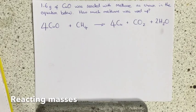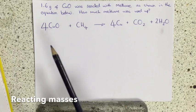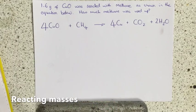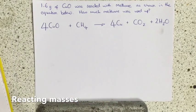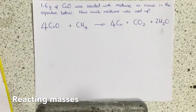Hi guys, I'm just going to show you a really easy way of doing one of these reacting mass calculations. The example I've got is reacting methane with copper oxide like you did in your practical. Let's imagine we started with 1.6 grams of copper oxide and we react it with methane gas. The question is how much methane gas would we actually need?